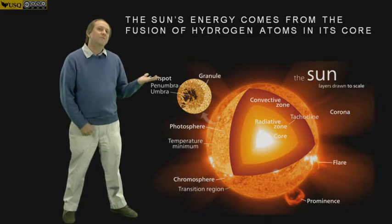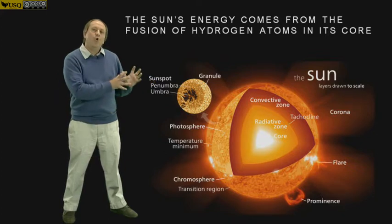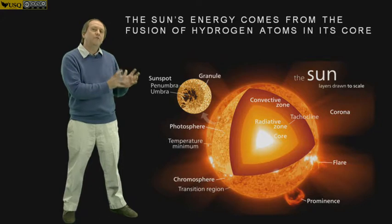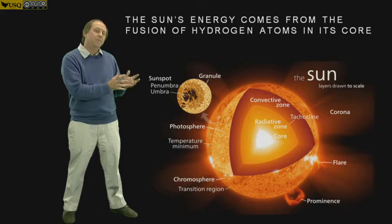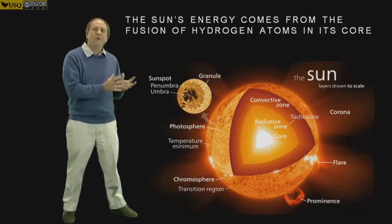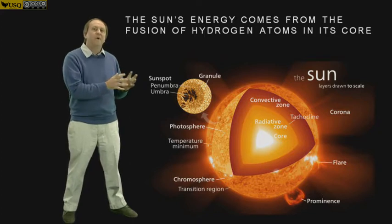If we could do a cutaway of the Sun, what we'd see is various layers. At the very core of the Sun is an incredible nuclear furnace where hydrogen atoms are fused together to produce a new element called helium. The conversion of hydrogen to helium at the core produces a huge amount of energy. The core is incredibly hot, something like 15 or 20 million degrees.